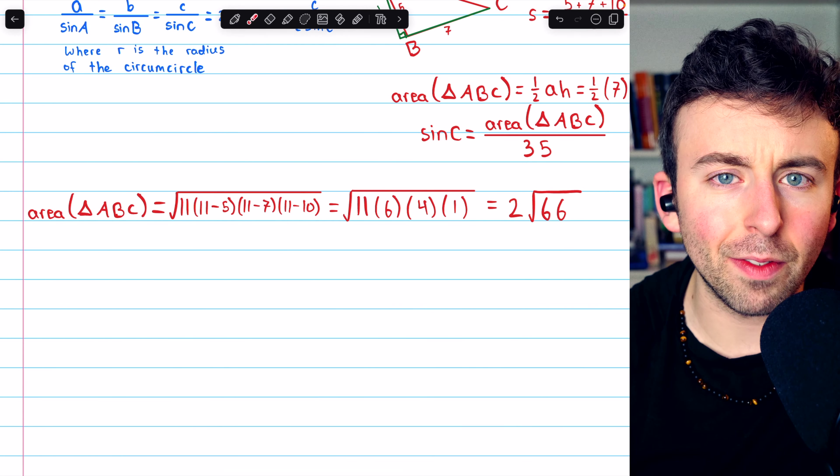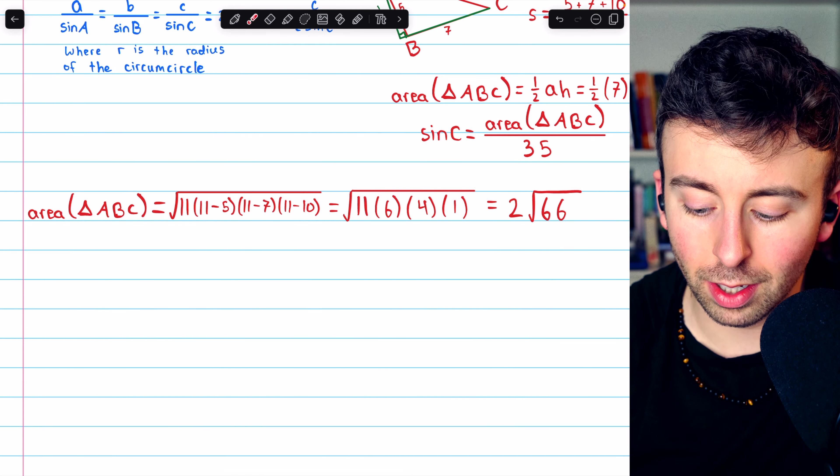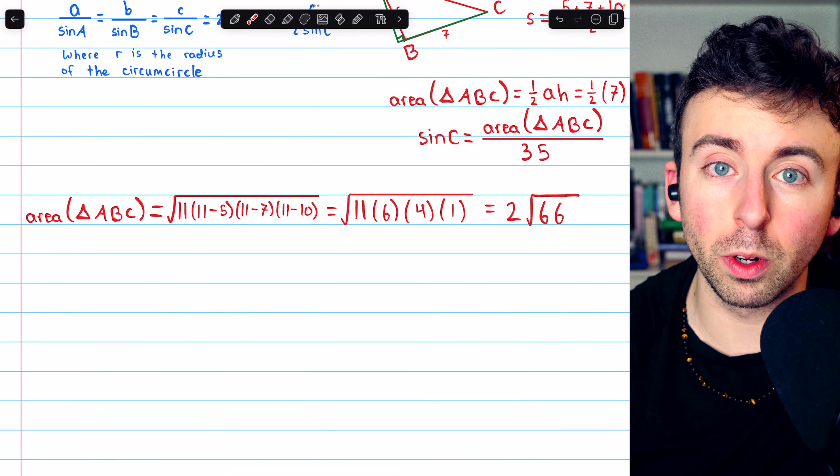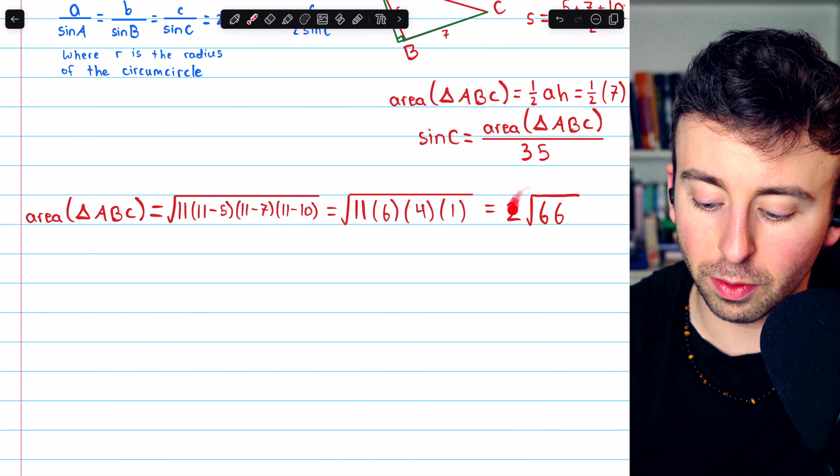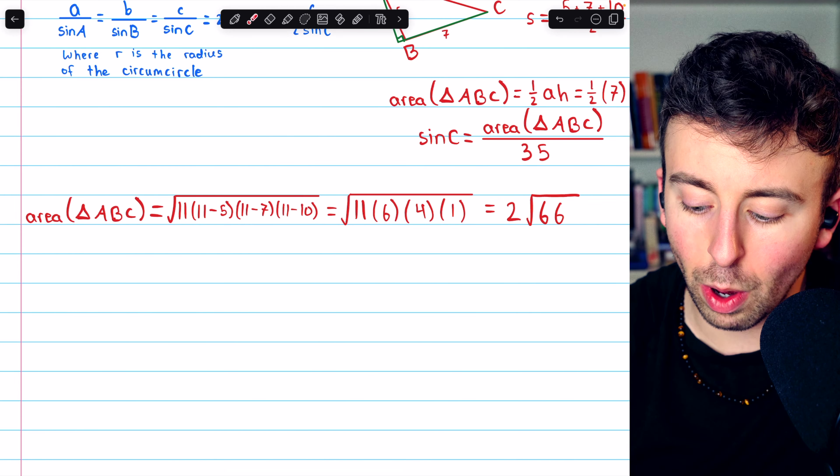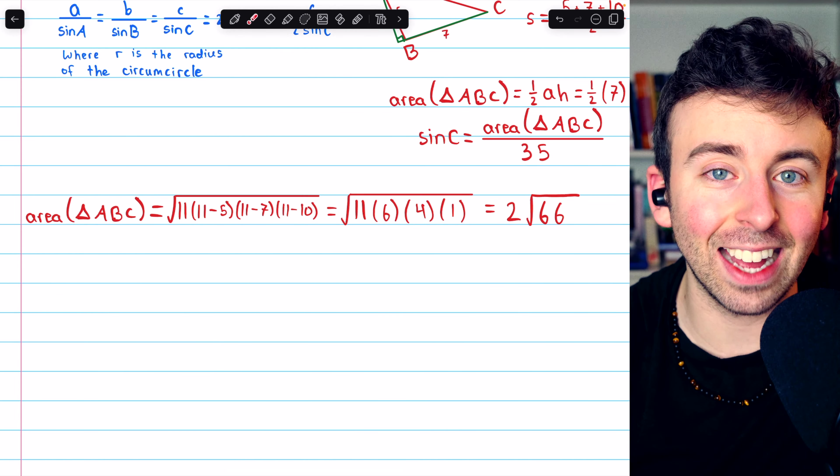We can take a 4 out of that, and then take the square root, and thus taking the square root of 4 out of the radical. This is our simplified expression: 2 times the square root of 66. That's the area.